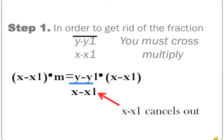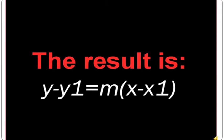Here are the steps of point-slope form. Step 1: in order to get rid of the fraction, you must cross multiply, therefore canceling out x minus x1. Remember, what you do to one side you must do to the other. The result becomes: y minus y1 equals m times (x minus x1).